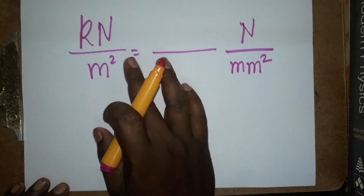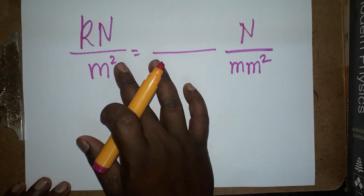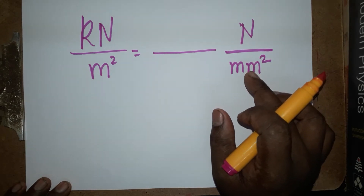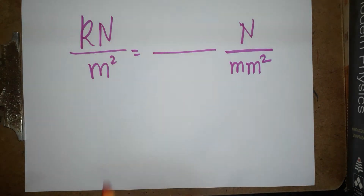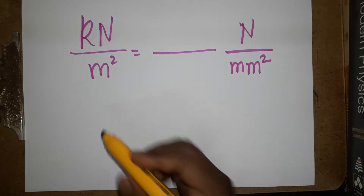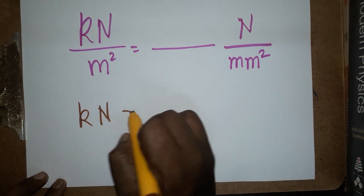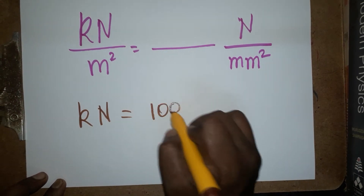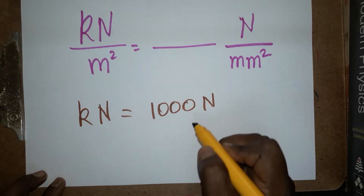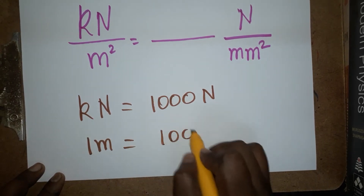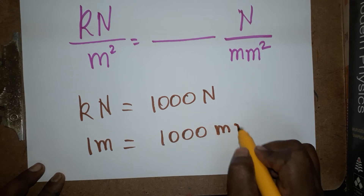Hello students, today we are going to learn how to convert from kilonewton per meter square to newton per millimeter square. This unit is for pressure, which is equivalent to pascals. First, we will learn the basics: one kilonewton is equal to one thousand newtons (10³), and one meter is equal to one thousand millimeters.